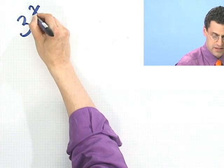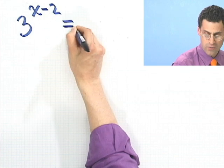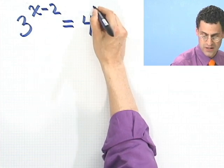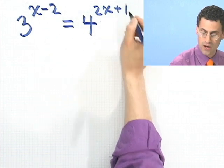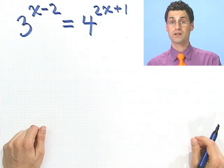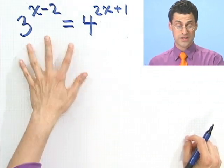Pretty easy. So when I can actually massage one side to match up perfectly with the base of another, I'm in hog heaven. But consider the following more exotic example. Suppose I take 3, raise it to the x minus 2,